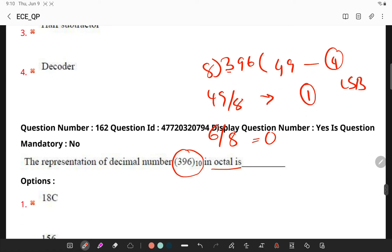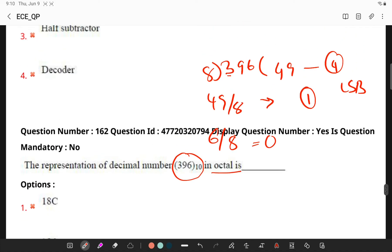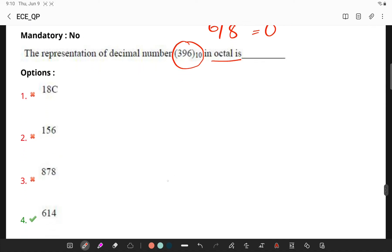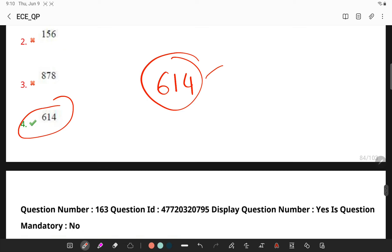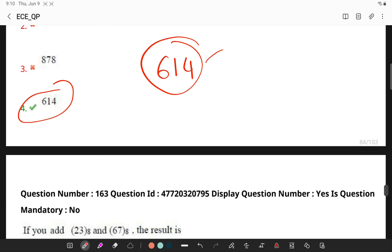So, now, if I write the equivalent part, if I see the options, I simply get 614 which is my answer because we are supposed to write MSB to LSB.